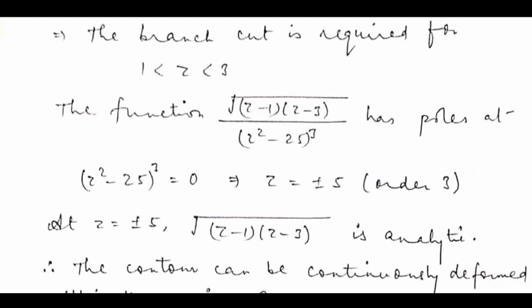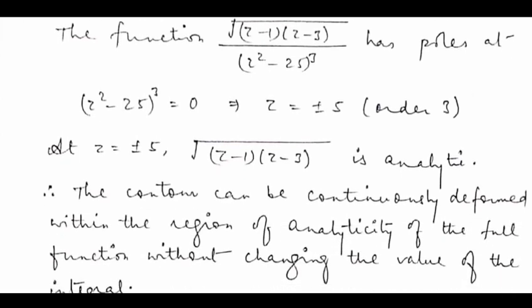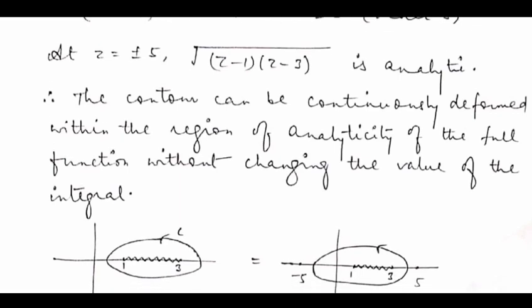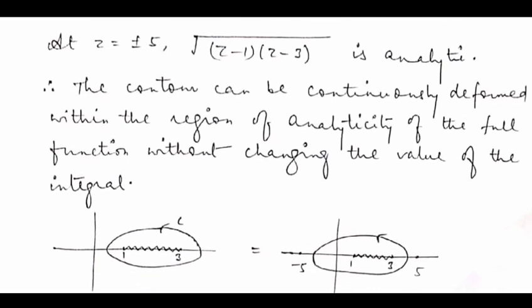What we need to see is that at z equals plus or minus 5, the location of the poles, the numerator root over (z minus 1)(z minus 3) is actually analytic. Since at z equals plus or minus 5 the numerator is analytic, the contour given in the question can be continuously deformed within the region of analyticity of the function without changing the value of the integral.